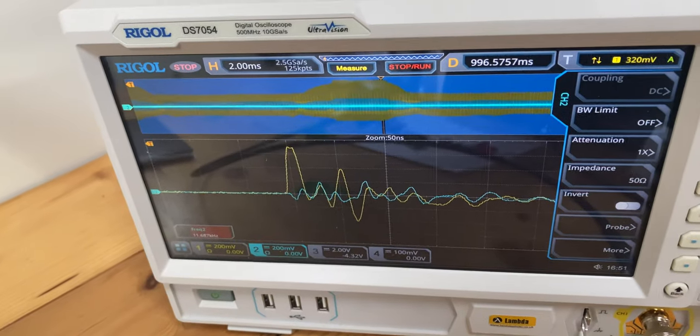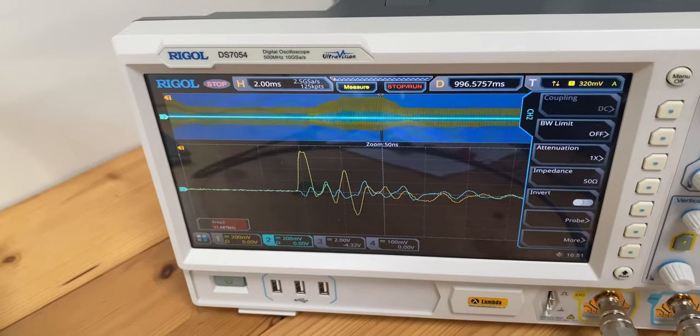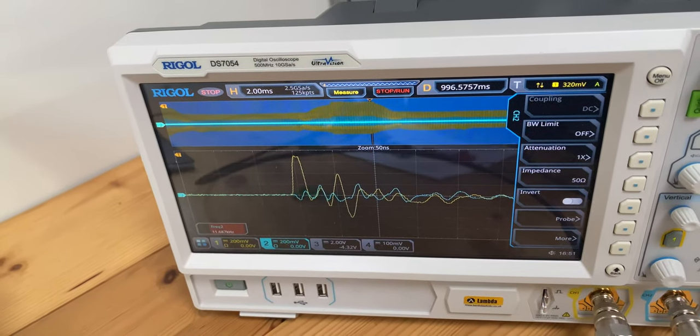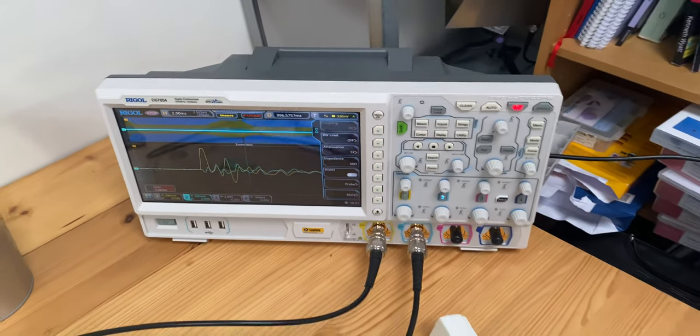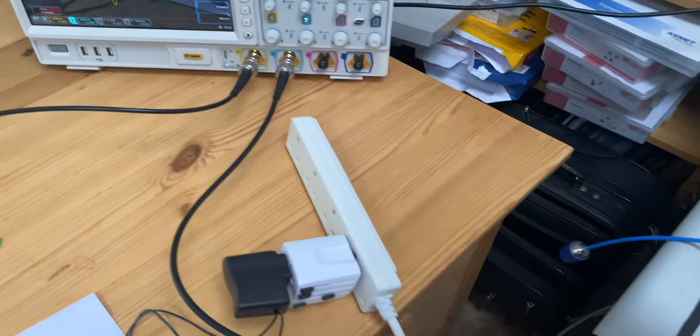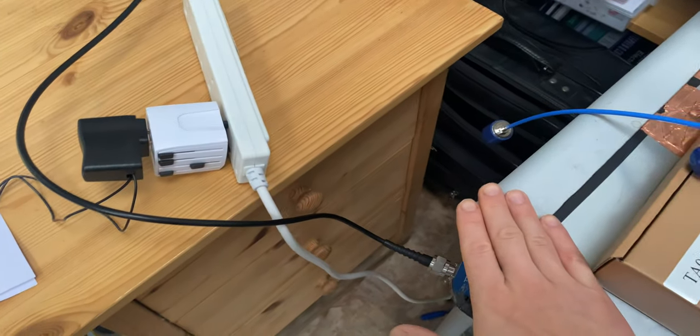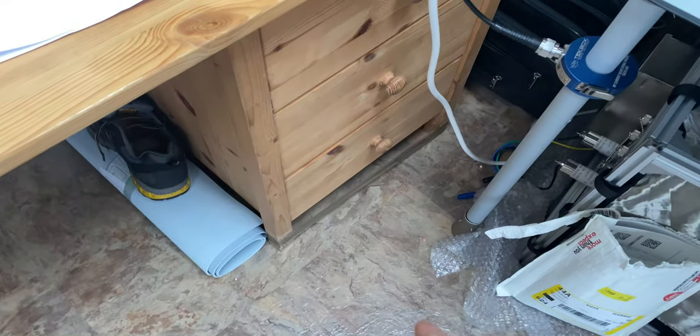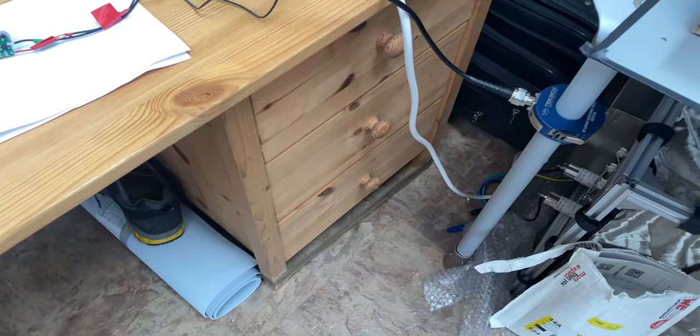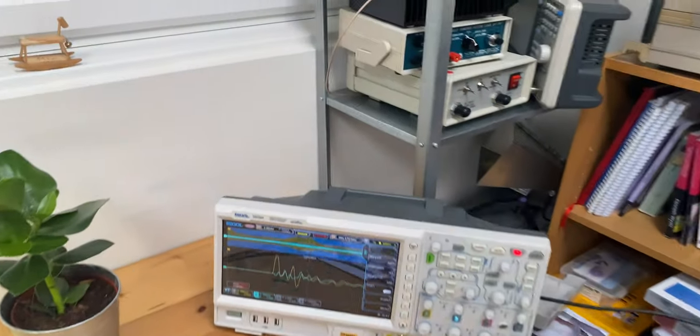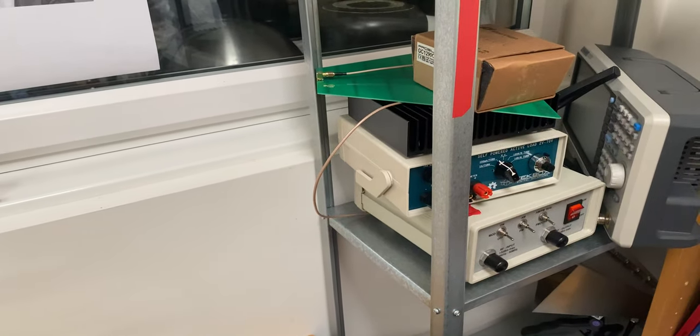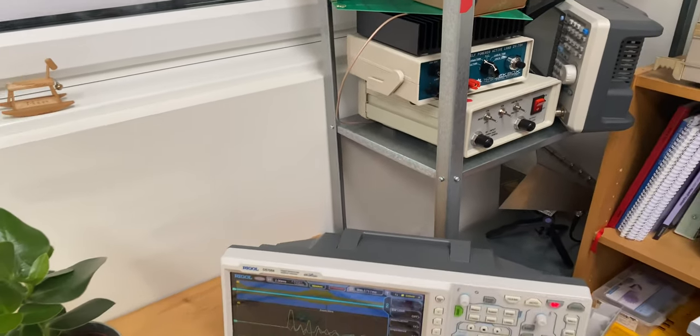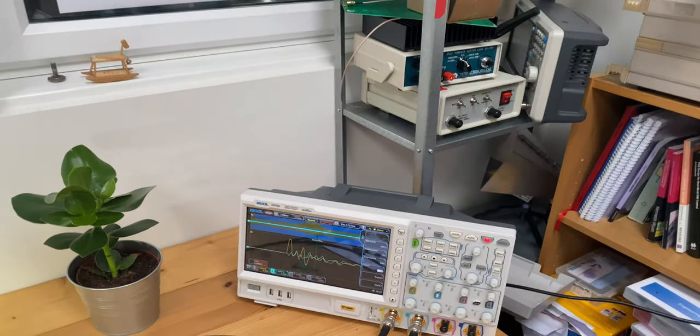And this is a good demonstration to show that when the common mode current travels, they use any possible metal structure that they can find. So in this case, they find the metal structure of the table. They find the earth, of course, as a part of the transmission line. And I'm pretty sure if I clamped on this, I will also be able to measure some common mode current on this post here.